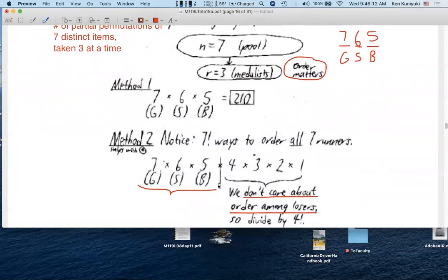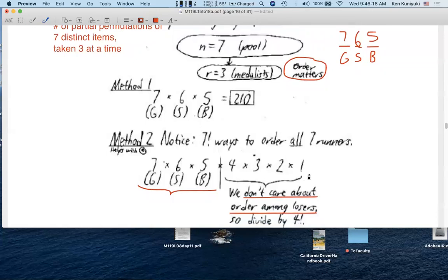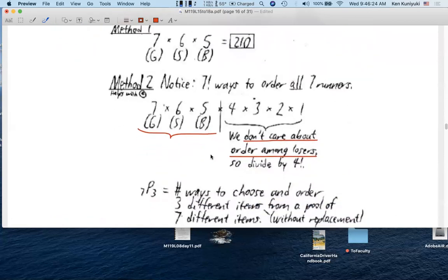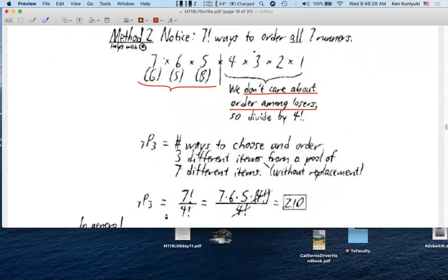Now, I know that it's cruel to call these losers, but in China, you better win the gold, otherwise you're a loser. Certainly in China, the non-medalists would be losers. But since we don't care about the order among the losers, we take the seven factorial, and we divide it by four factorial. And that's how you get 7P3.